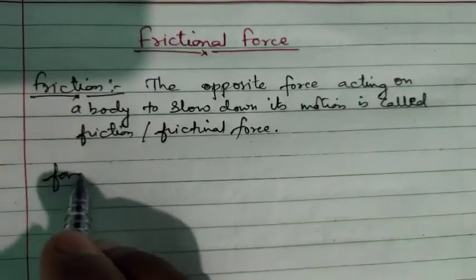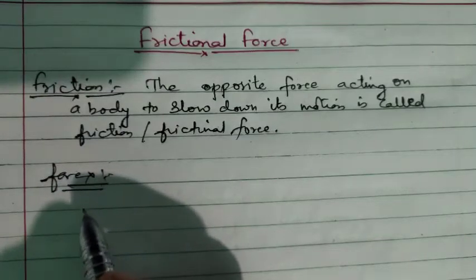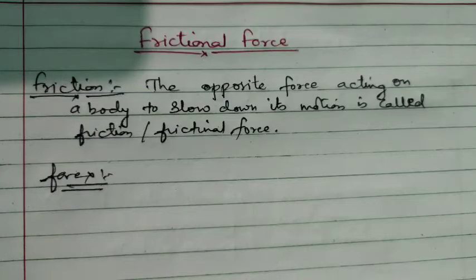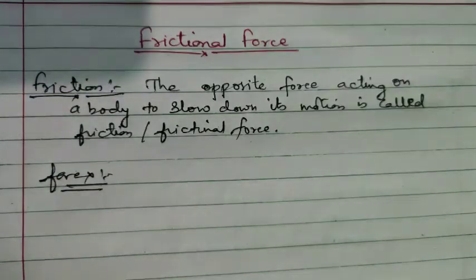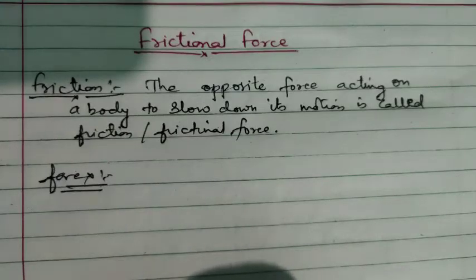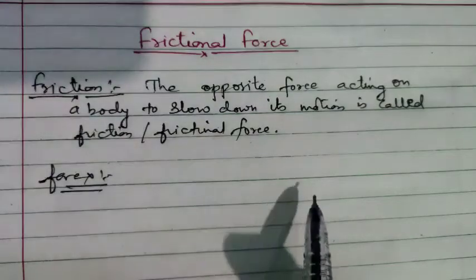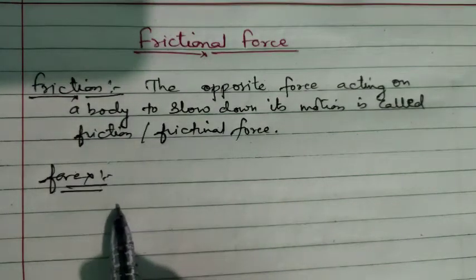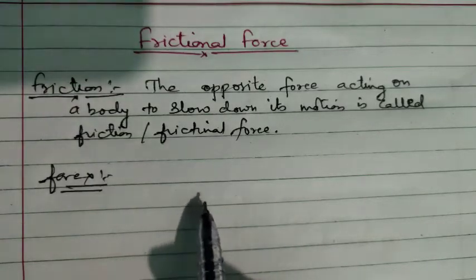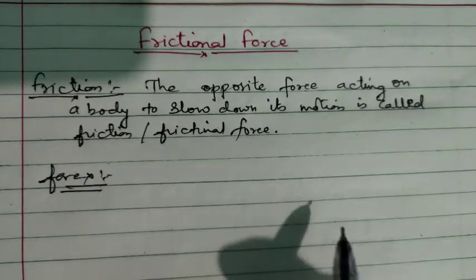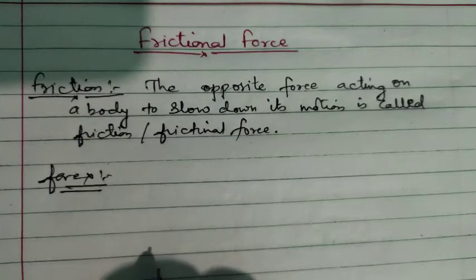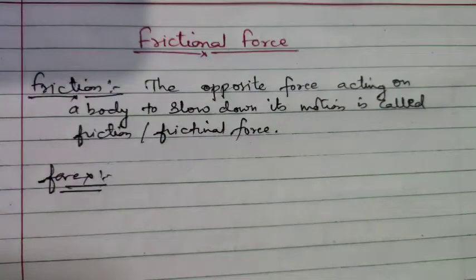Now let us understand with a few examples. For example, you all have watched cricket. When a batsman strikes a ball and hits a grounded shot, the ball rolls over the ground. As the ball covers distance, its speed slowly slows down and it stops. So there is some force acting opposite on that ball to stop it — that type of force is called frictional force.